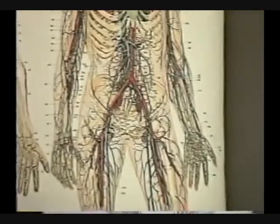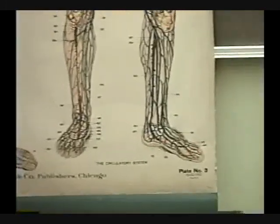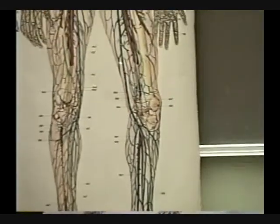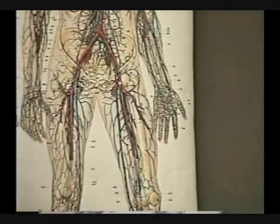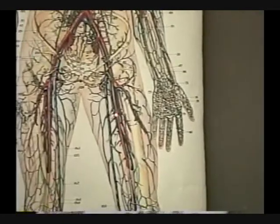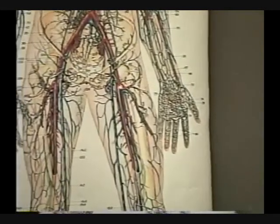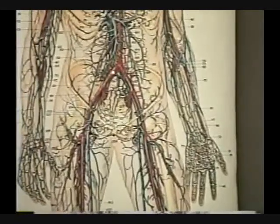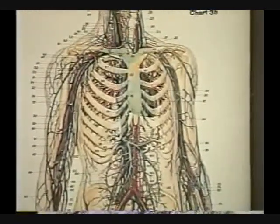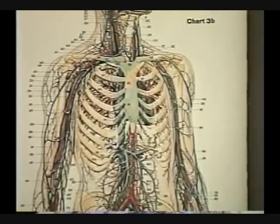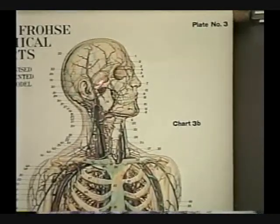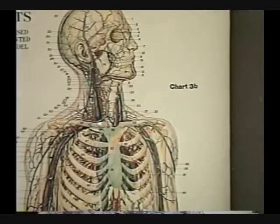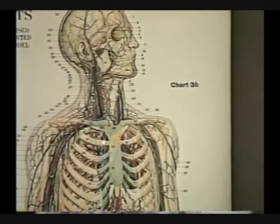Starting from the foot at the big toe, we come up the great saphenous vein, which is a superficial vein paralleling the deep femoral vein. They unite where it becomes the common iliac vein, which then goes up the inferior vena cava into the right atrium. From above, draining out of the sinuses, it comes down as the external jugular vein, which joins the subclavian vein to become the brachiocephalic and then the superior vena cava.